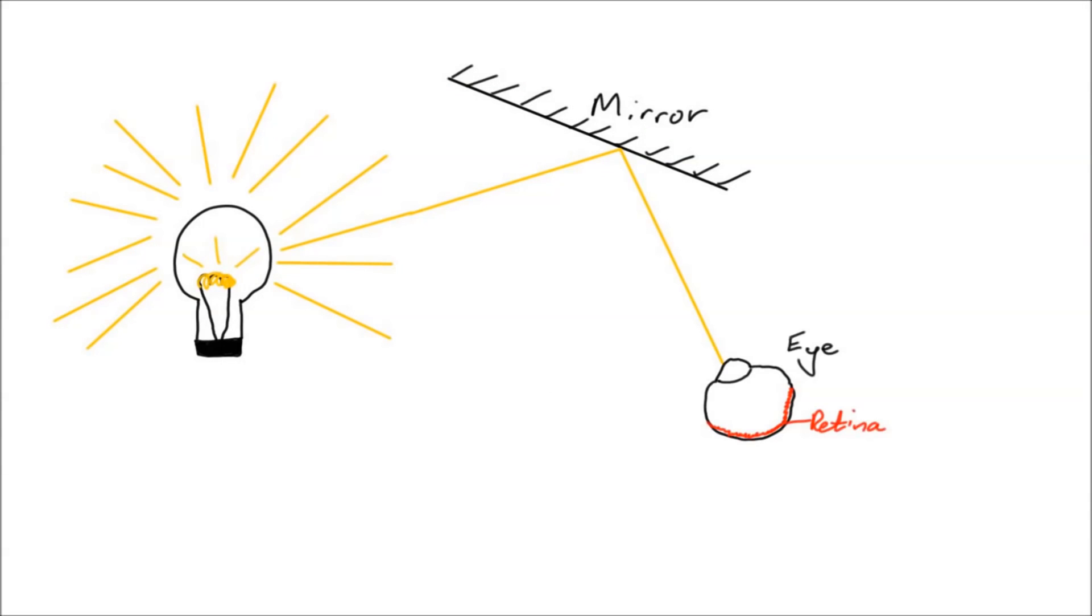Some of this light enters my eye and I see it. This explains why, when you look into a mirror, what you can see depends on the angle which the mirror makes with your eye.